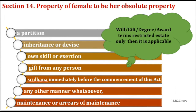One of the provisions mentions that properties acquired by a female — whether by partition, inheritance, her own skill, gift from any person, maintenance, or in any other manner — will be considered absolute property and not a limited estate.